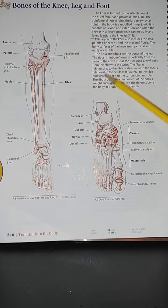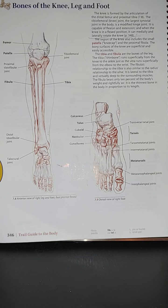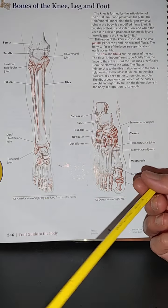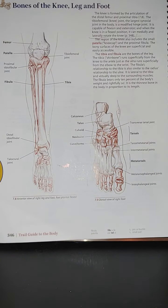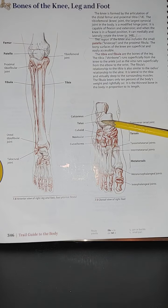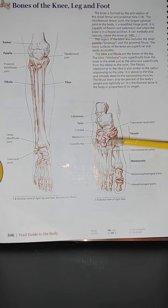The fibula bears only 10 percent of the body's weight, and it is the thinnest bone in the body in proportion to its length. Looking at image 7.9, it is a dorsal view of the right foot. We have the calcaneus, the talus, the cuboid, the navicular, and the cuneiforms.